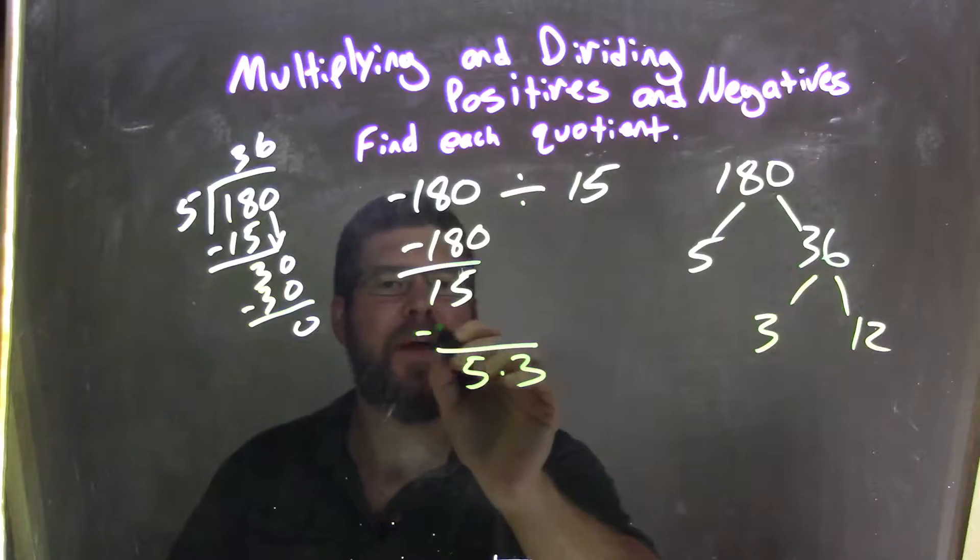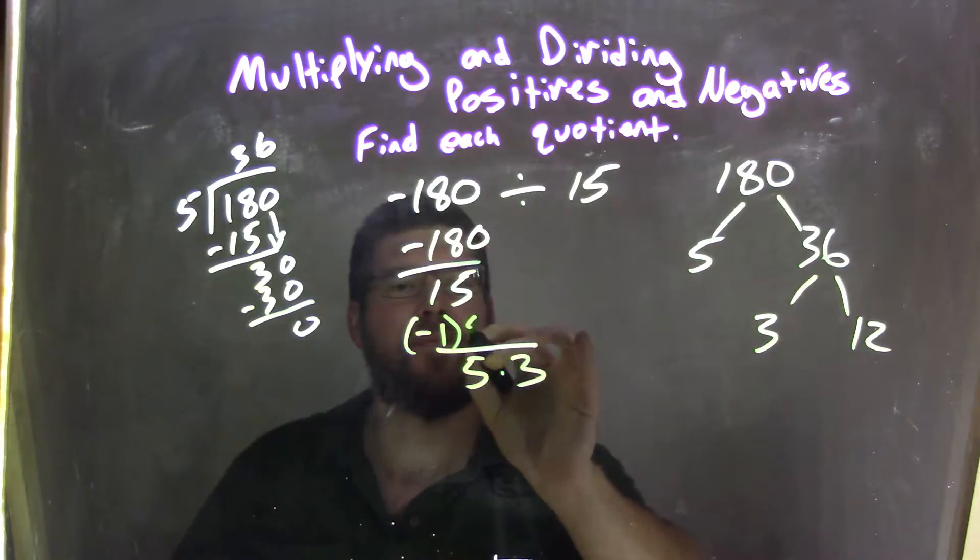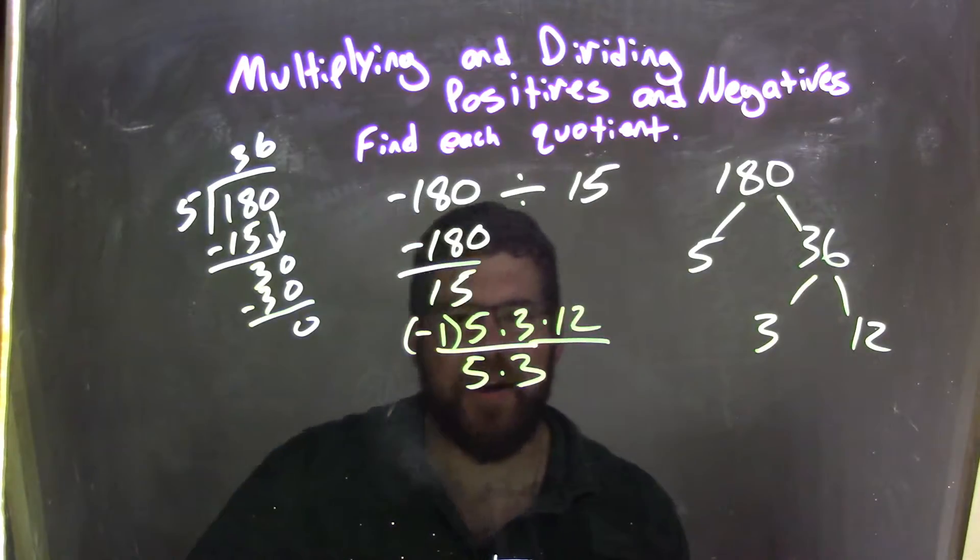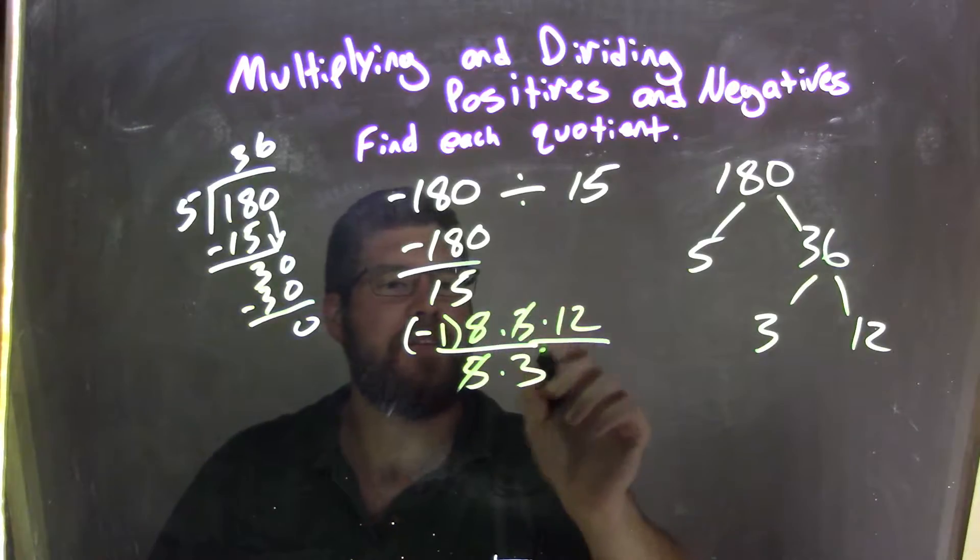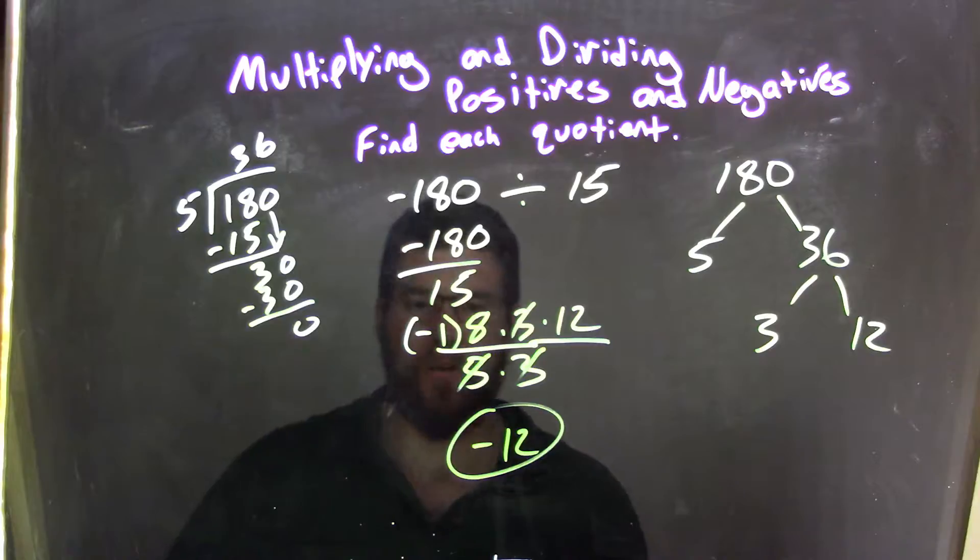The numerator, negative 1 for the negative. 180, I know, is 5 times 3 times 12. And now I'm going to start cancelling out. The 5 cancels, the 3s cancel, and now we're left with negative 1 times 12, which is negative 12, our final answer.